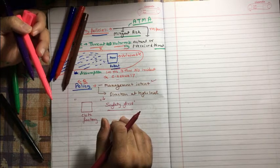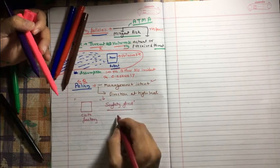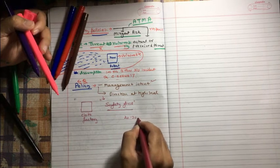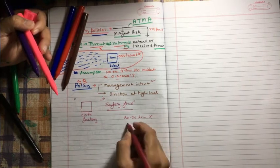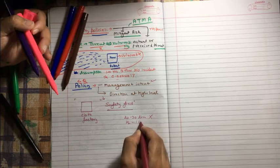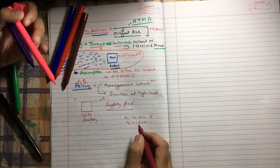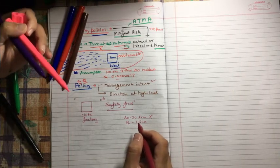And also you need to understand this policy should not be a 20 to 30 line description. No, it's always half to one line. Very short detail we must have in policy.